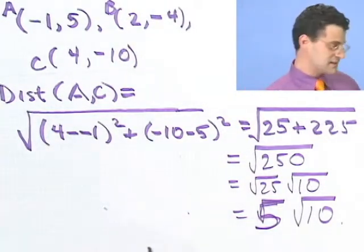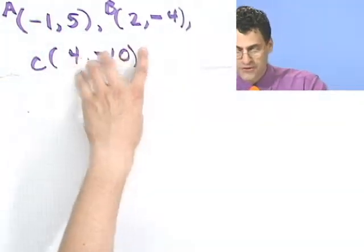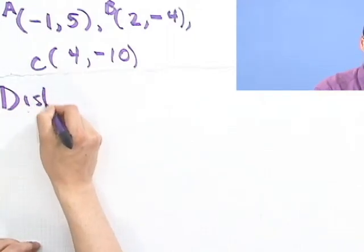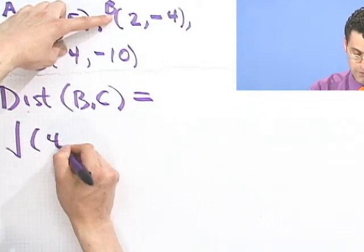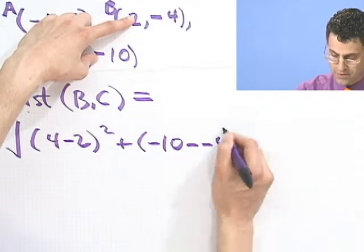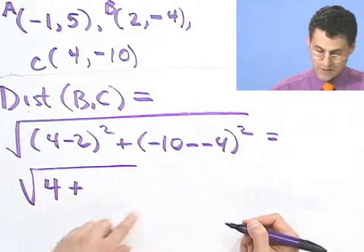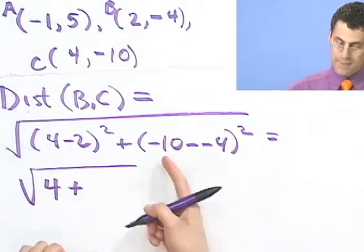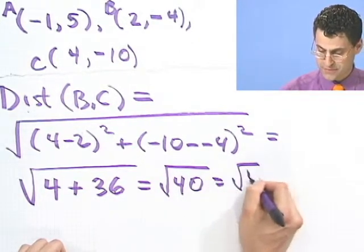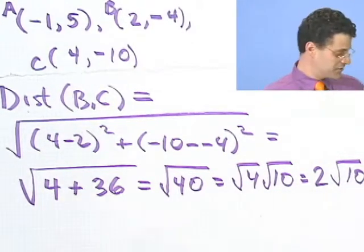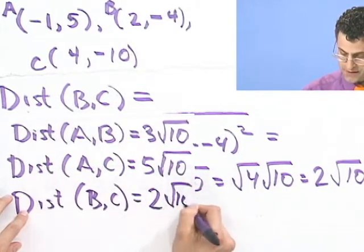Now I need to compute the last distance — between B and C. That equals the square root of (4 − 2)² + (−10 − (−4))², which is the square root of 2² + (−6)² = the square root of 4 + 36 = the square root of 40 = the square root of 4 times the square root of 10, which equals 2√10.